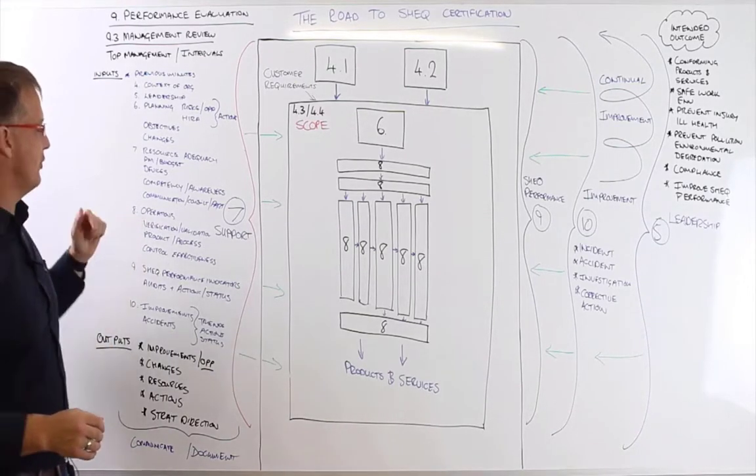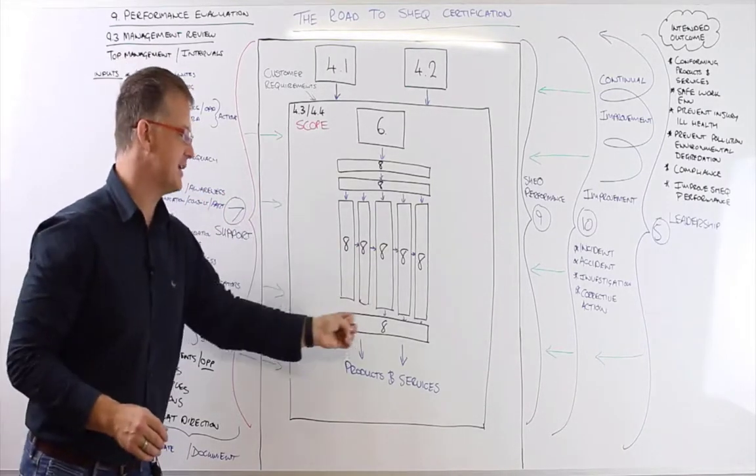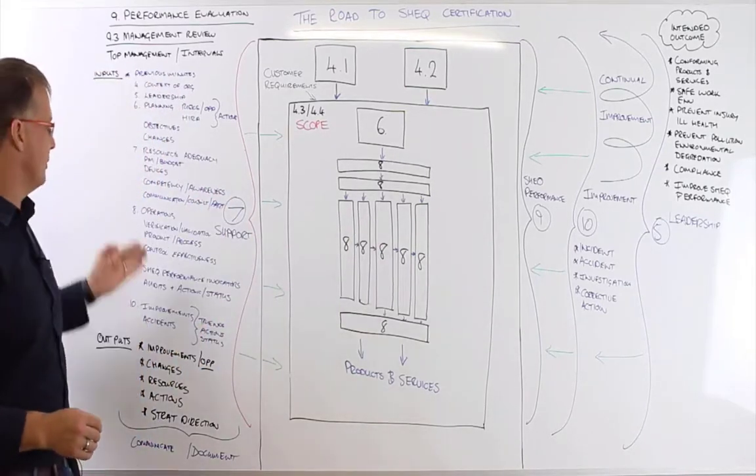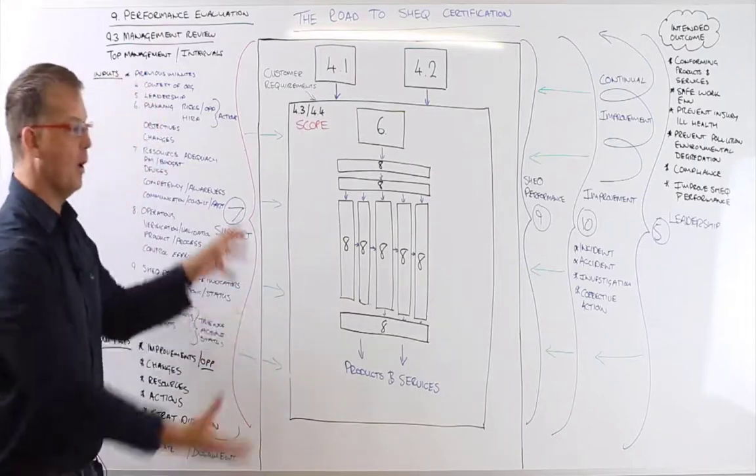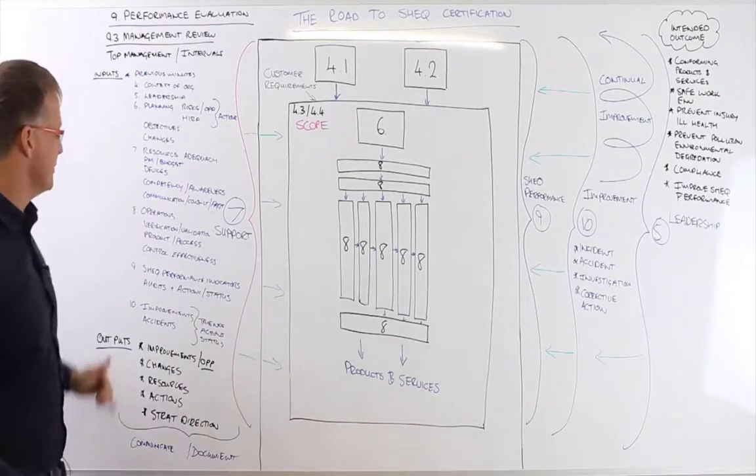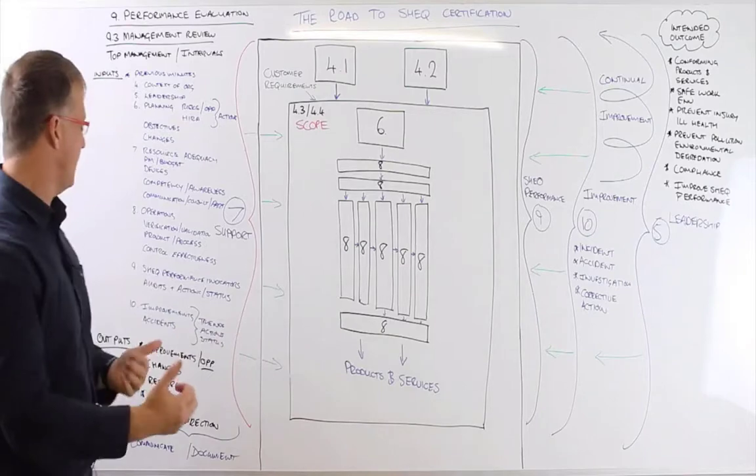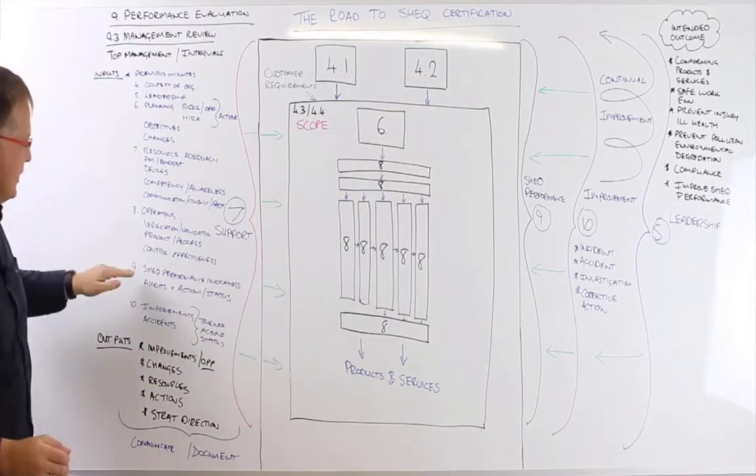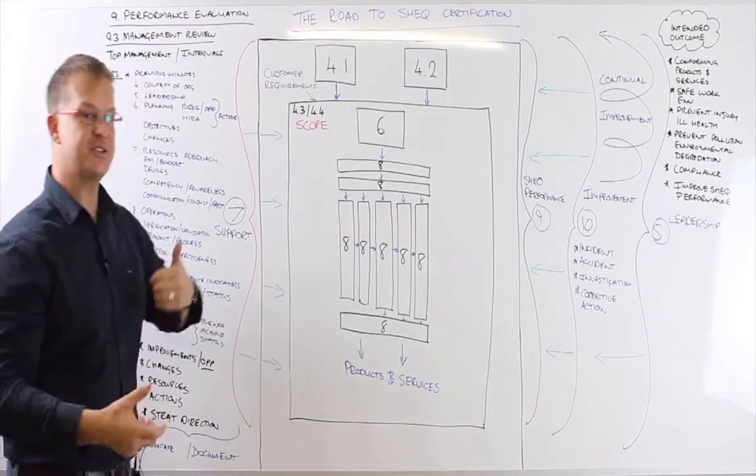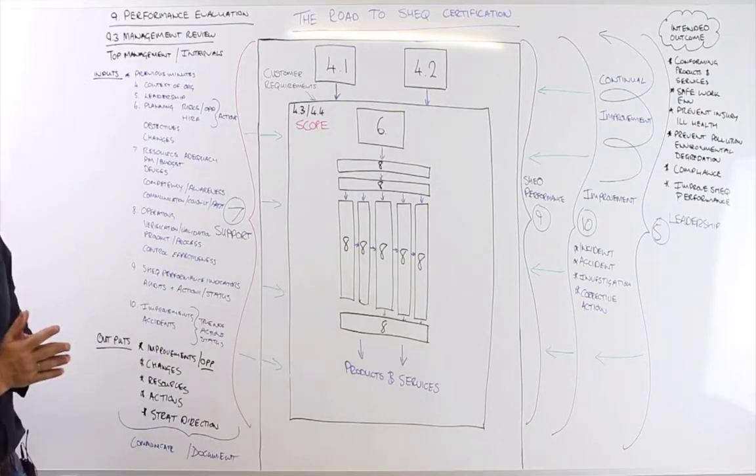Another management review input around operations would be an understanding of verification and validation activities and the number of nonconformities or the throughput performance. We'd have a look at product and process performance. What are the types of products or services that we're selling? What is our process throughput? We'd have a look at the control hierarchy effectiveness based on qualitative and quantitative indicators. We'd have a look at our SHE performance indicators. We'd have a look at accident statistics and environmental statistics and resource utilization. All of this would be captured into our management review presentation.